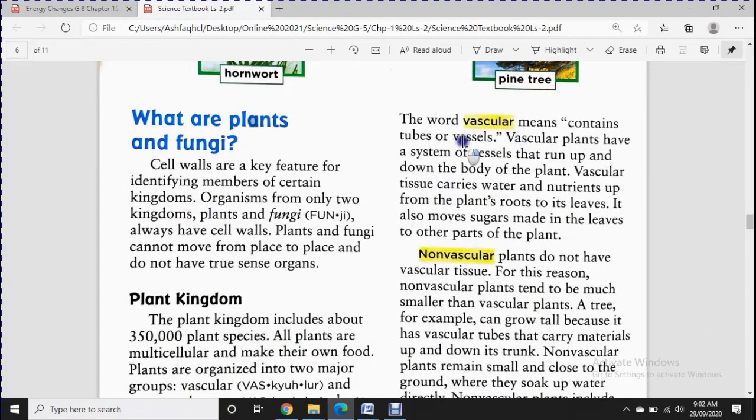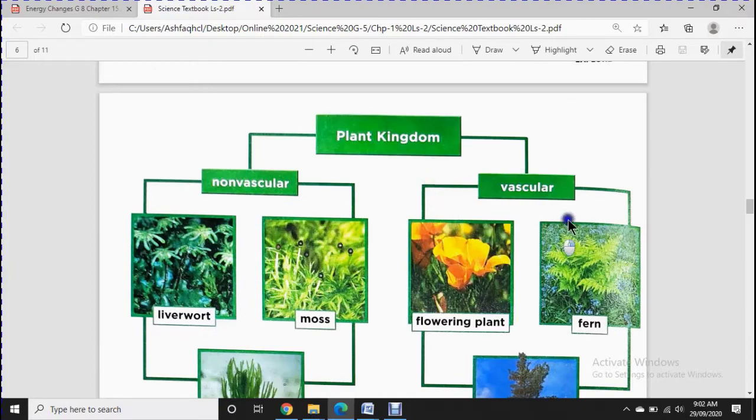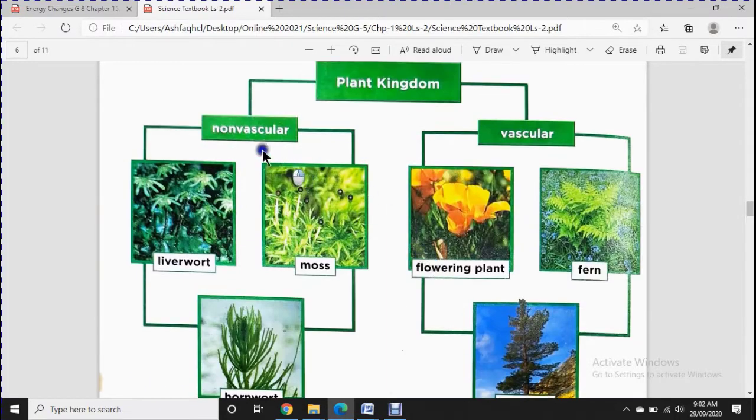First, vascular means contain tubes or vessels. The plants have tubes same like in the human body. Even you're going to see on your hand, or on your hand upper side, or in your wrist, you can easily find the veins, the tubes. In the same way, vascular plants have vessels or tubes.